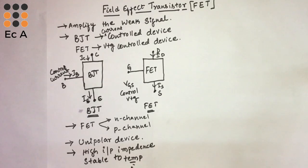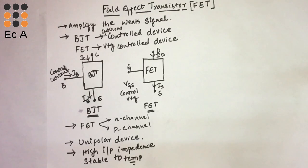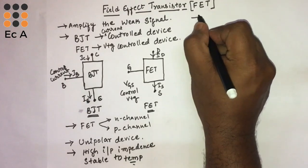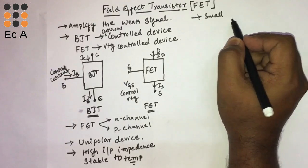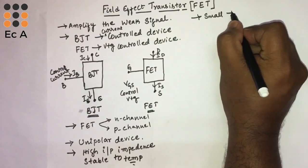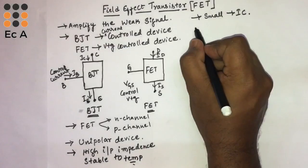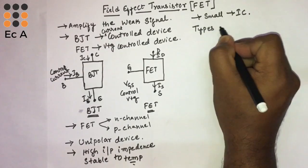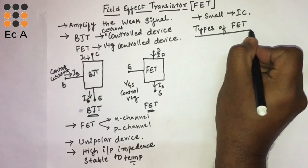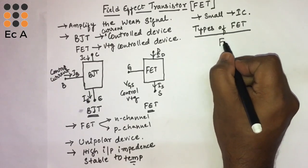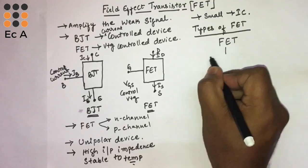FET is having high input impedance and is more stable to temperature than BJT. FET is more stable to temperature than BJT, and FETs are usually very small compared to BJT, making them practically useful in ICs — integrated circuits.